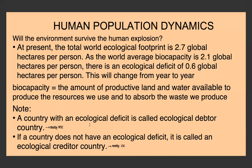A country with an ecological deficit is called an ecological debtor country, while a country without a deficit is an ecological creditor country. Looking at it country by country, we can see that many countries are ecological debtors — they need more land than they actually have and are using more than they should.